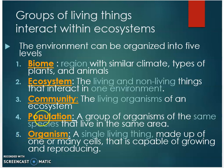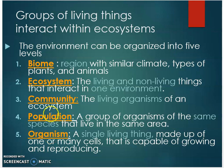So if we were to go backwards from five to one: populations are a group of organisms. Communities are those living organisms in the ecosystem. The ecosystem includes all the living and non-living things. The biome includes all of these.